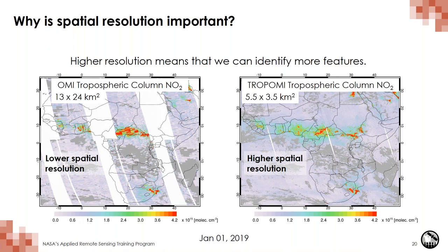These maps show NO2 from two different instruments. On the left is from OMI, which has a spatial resolution of 13 by 24 kilometers squared. On the right is TROPOMI, another instrument, which has a finer spatial resolution of 5.5 by 3.5 kilometers squared. On these images, larger values of NO2 are seen in the warmer colors — yellows and reds. You can see in the image on the right the features are smoother, and in some cases, like the small hotspot seen in northern South Africa, this can only be seen in the higher resolution image. So higher resolution means we can sometimes identify more features than in the lower resolution data.